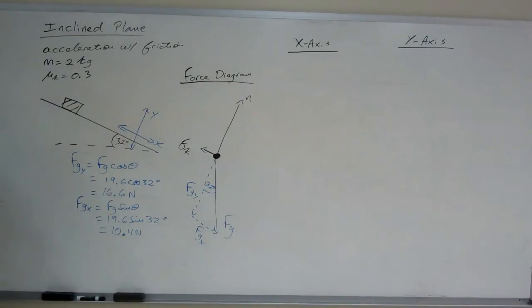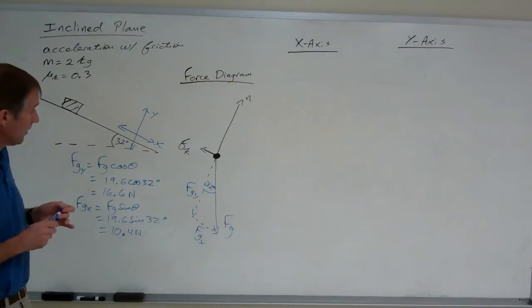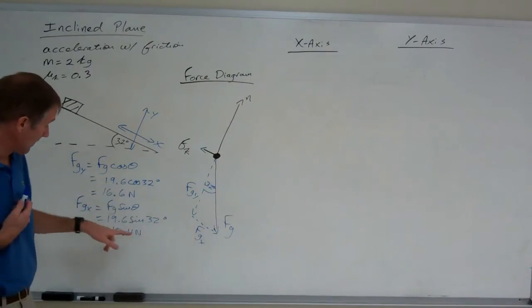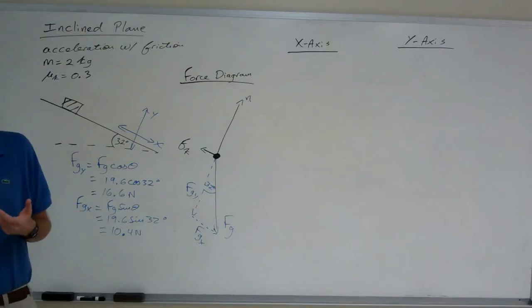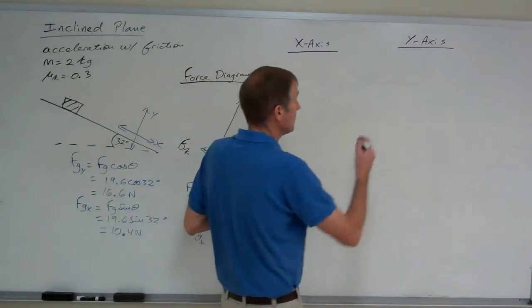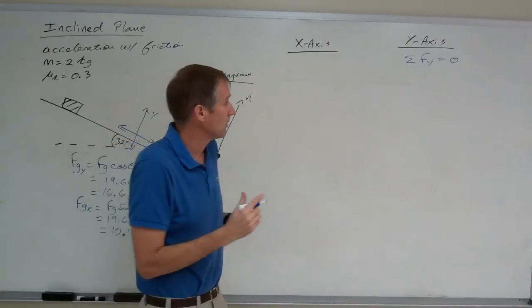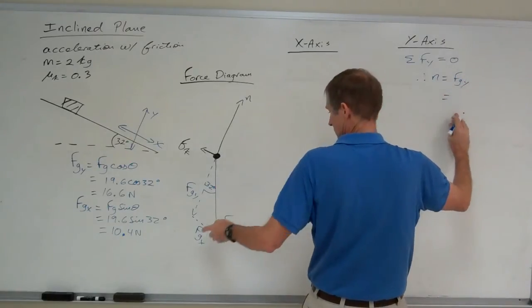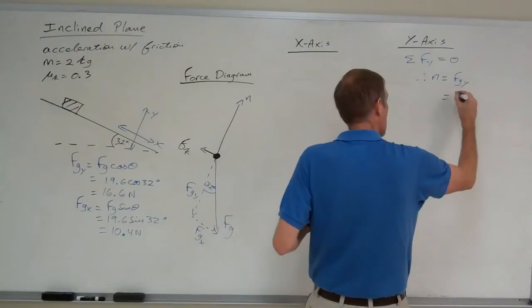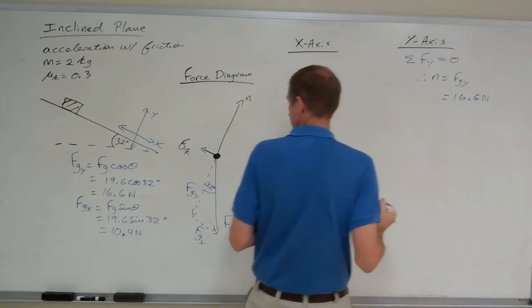The goal is to determine the acceleration of the block down the ramp, which is in the x-axis. We know the value of Fgx. We need to know the value of the kinetic friction. To figure out the kinetic friction, I need to know the normal force, which is in the y-axis. Net force in the y-axis is equal to zero. There's no motion at all in the y-axis. It's in equilibrium. Therefore, the normal force equals Fgy, which is equal to 16.6 newtons.